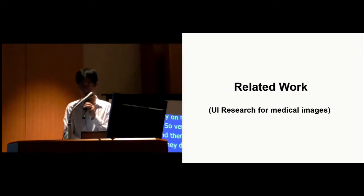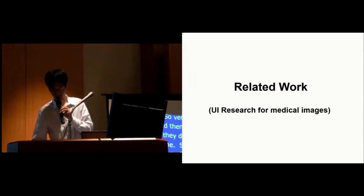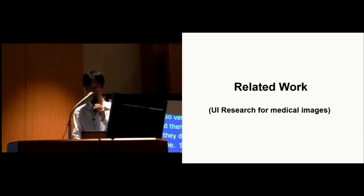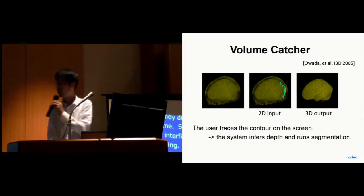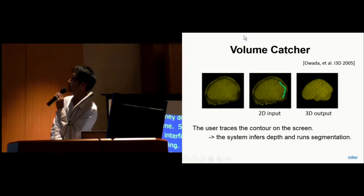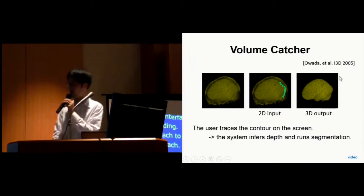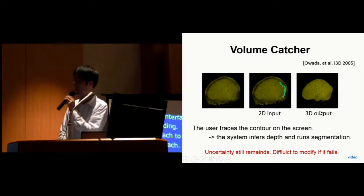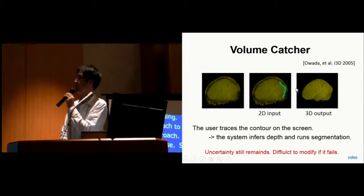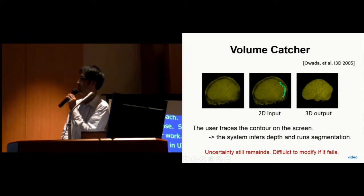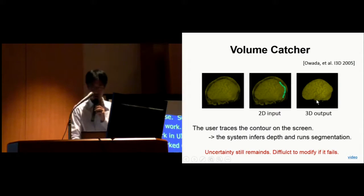Before introducing our work, let me mention some related work in UI research. One of my students previously worked on this kind of technique. User draws a line along the silhouette to the input, and then system returns a volume. This is kind of a nice system, but still, this is kind of automatic approach. You don't have control to the remaining area, and it can be difficult to modify if the result is not satisfactory.